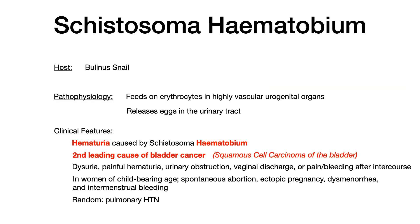The bulk of what you need to know about schistosoma is about schistosoma hematobium. Once you know the difference in the spine, you can focus on memorizing what you need to know about hematobium specifically. The host is the bulinus snail. Pathophysiologically, schistosoma hematobium feeds on erythrocytes in urogenital organs, which are highly vascular. Eggs get released, move through the urogenital system, and are ultimately urinated out.